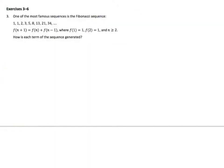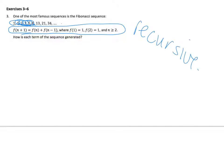One of the most famous sequences is the Fibonacci sequence. The Fibonacci sequence says that a term is the previous two terms added together: 1 plus 1 is 2, 1 plus 2 is 3, 2 plus 3 is 5, 3 plus 5 is 8, 5 plus 8 is 13, etc. The sequence can be written in function notation as F of (n+1) equals F of n plus F of (n-1). That is a recursive formula.